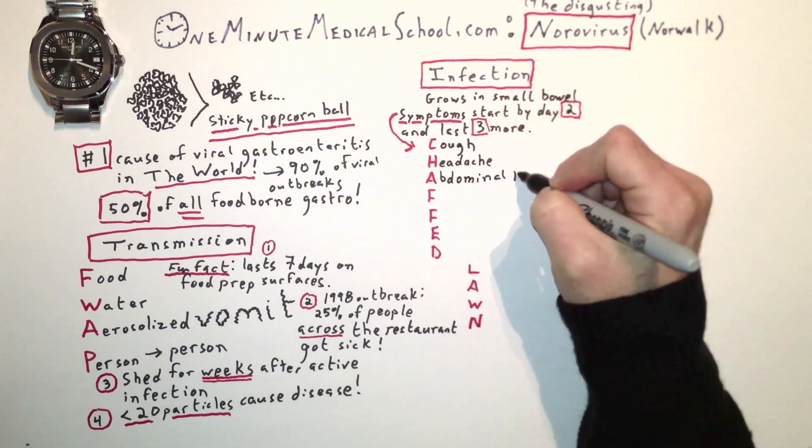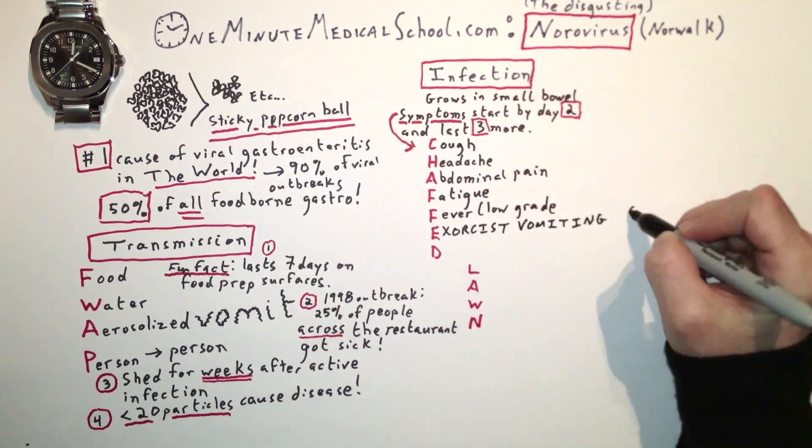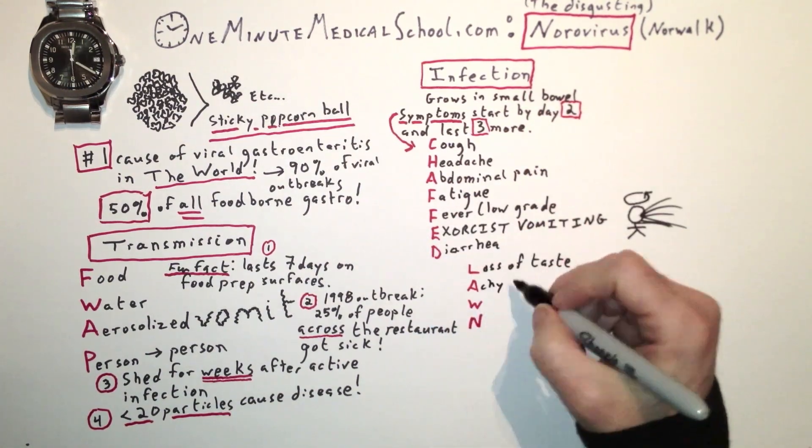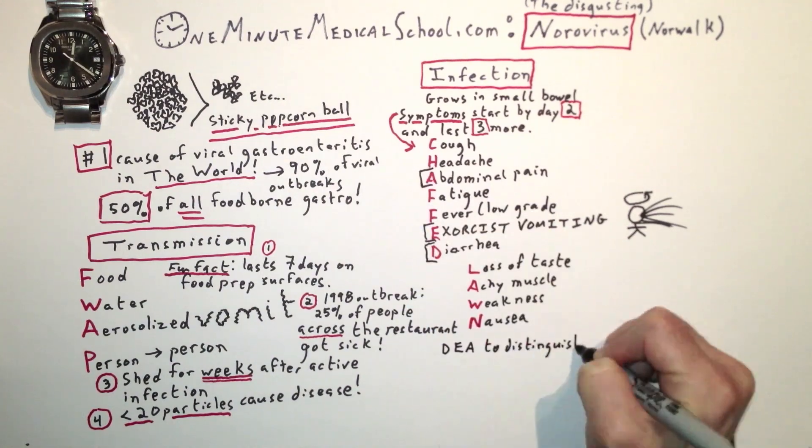Symptoms are cough, headache, abdominal pain, fatigue, fever, exorcist vomiting, diarrhea, loss of taste, achy muscle weakness, and nausea.